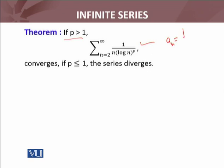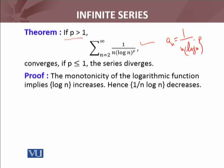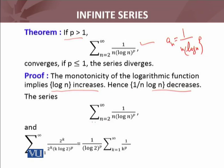Let a_n equal 1 over n times log of n raised to power p. The monotonicity of the logarithmic function implies log n increases, hence 1 over n·log n decreases — it is a decreasing function. By the Cauchy condensation theorem, the original series and the series summation of 2^k times a_{2^k} both converge or diverge together.